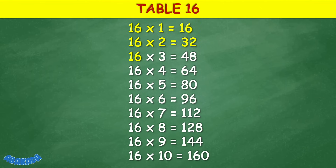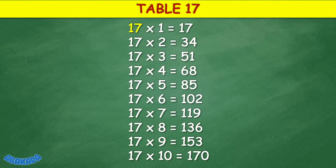Table 16: 16 times 1 equals 16, 16 times 2 equals 32, 16 times 3 equals 48, 16 times 4 equals 64, 16 times 5 equals 80, 16 times 6 equals 96, 16 times 7 equals 112, 16 times 8 equals 128, 16 times 9 equals 144, 16 times 10 equals 160.